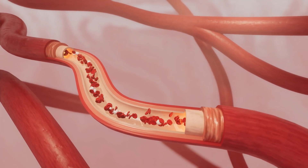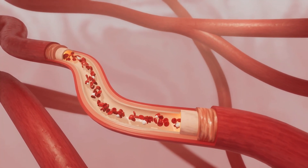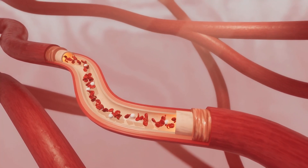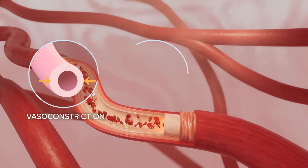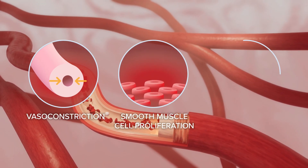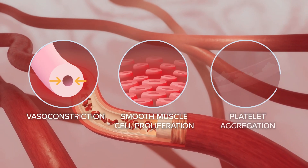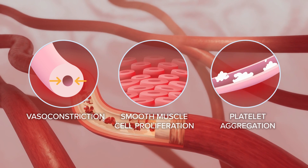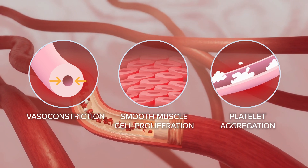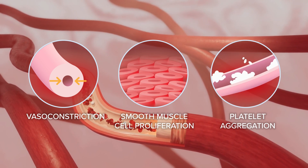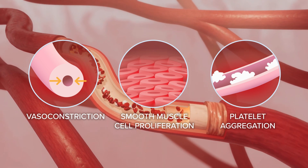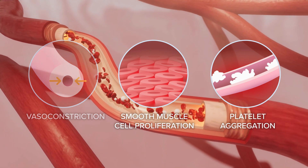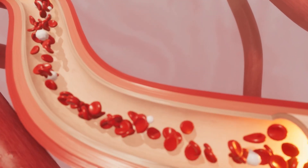Over the course of the disease, PAH manifests as remodeling of the small pulmonary arteries, resulting in vasoconstriction, smooth muscle cell proliferation, and platelet aggregation. These effects, together with inflammation and a host of other vascular changes, lead to increased resistance and pressure across the heart and lungs.